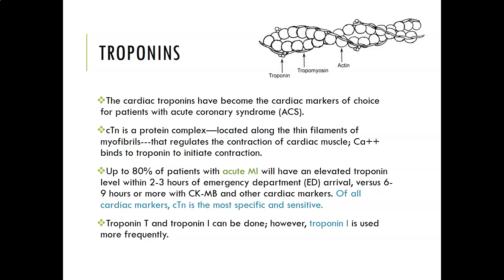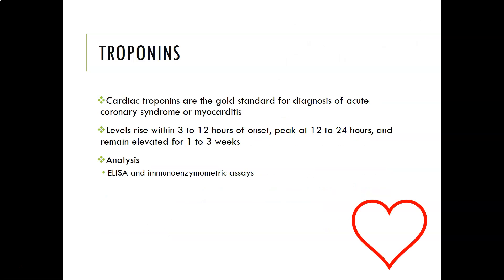Troponin T and troponin I are both cardiac markers — either one can be used. However, troponin I is used more frequently than troponin T. Cardiac troponin is the gold standard for the diagnosis of acute coronary syndrome or myocarditis, which is an infection of the heart muscle. The levels rise within two to three hours of onset, peak at 12 to 24 hours, and remain elevated for one to three weeks, which is useful because it can detect a heart attack even if it happened a day or two ago.